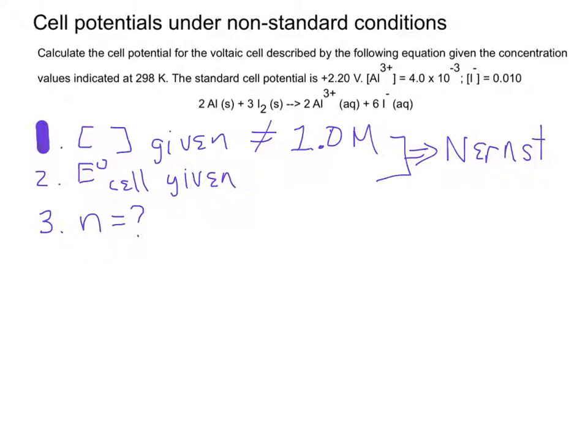So, the easy way to do this is to look at the half reactions, but when you're looking at the half reactions, take out the coefficients.